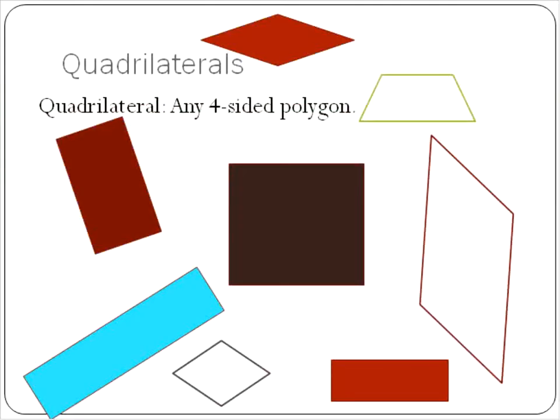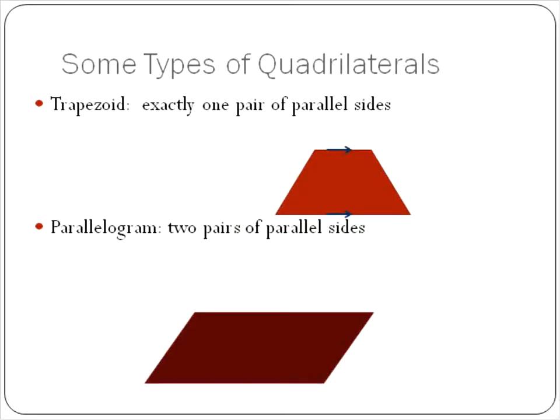Alright, let's take a look at some four-sided polygons or some quadrilaterals. We've got some all over the screen here. This one around the outside is definitely not a polygon because it has the curved edge, but that's just the border so don't even worry about that.